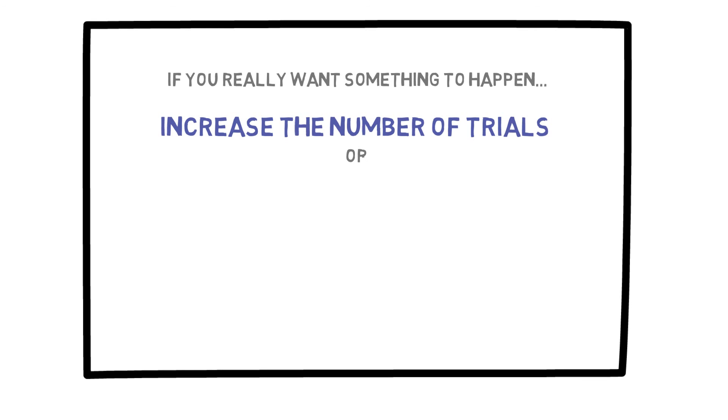In general, if you really want something to happen, you can either increase the number of trials, or increase the probability of success. That way, if you repeat the experiment independently enough times, you will eventually get the outcome you desire.